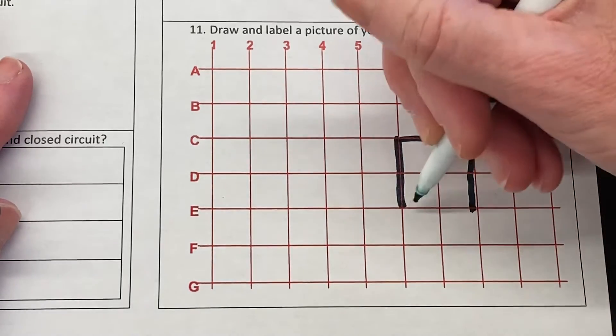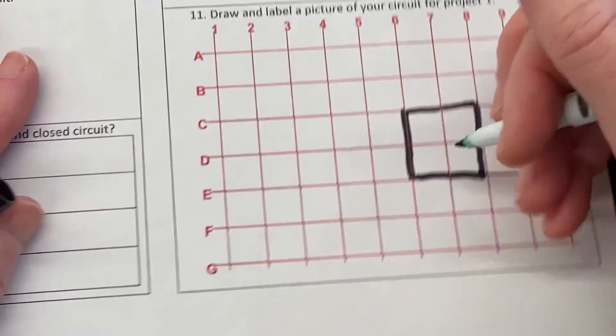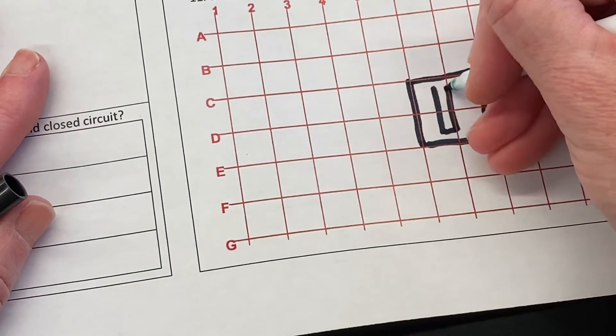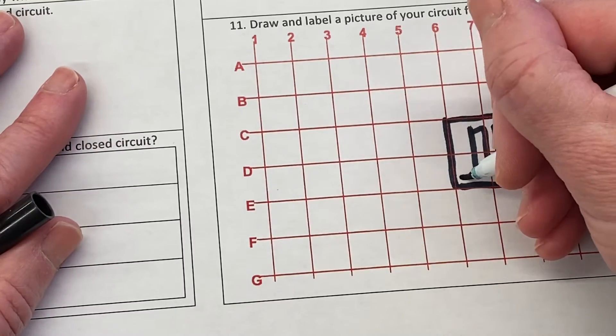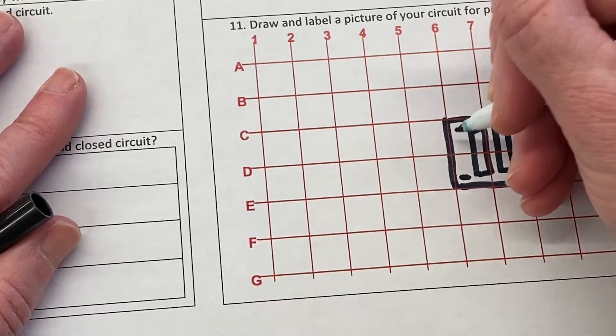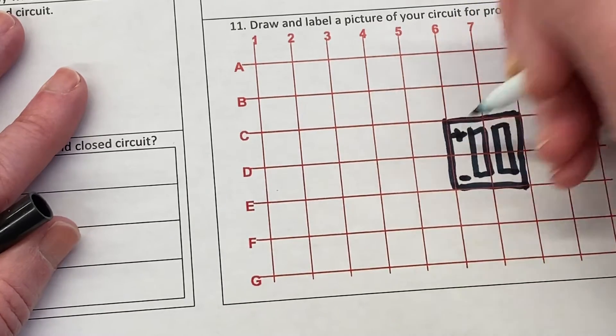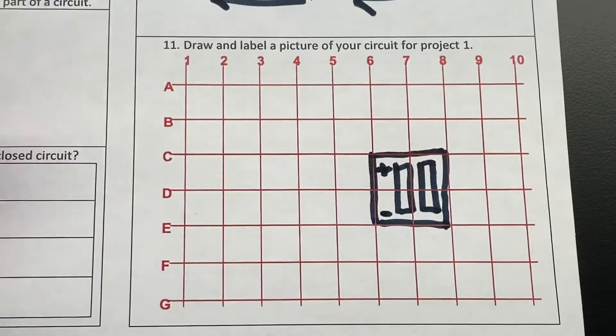Then I'm going to show my batteries are here, and I'm going to show that this is the negative side and this is the positive side. I'm doing my battery pack in black. Then I'm going to show the light. I'm going to use red for the light.